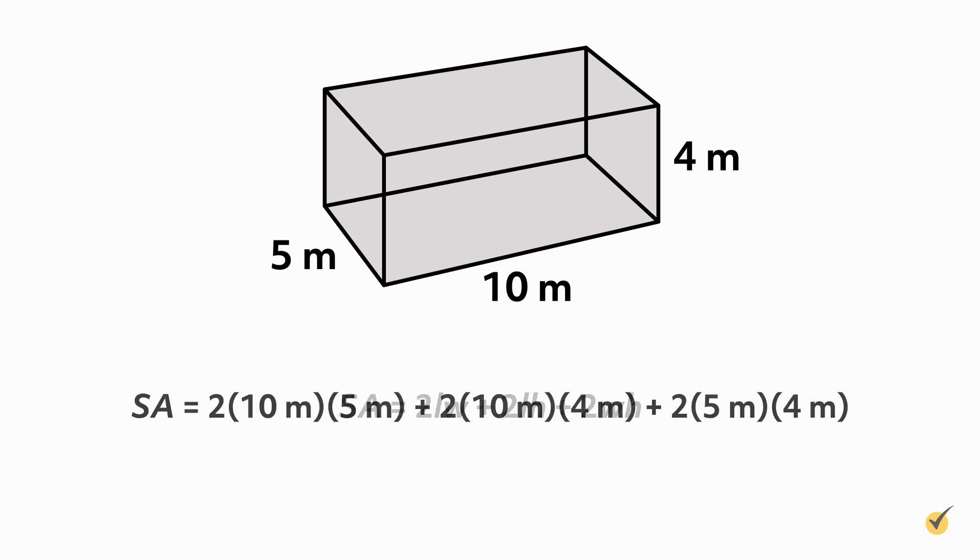When we substitute all this in, it looks like this. We have surface area is equal to 2 times 10 meters times 5 meters, plus 2 times 10 meters times 4 meters, plus 2 times 5 meters times 4 meters. Notice that we left the units in when we substituted.